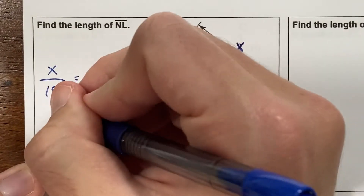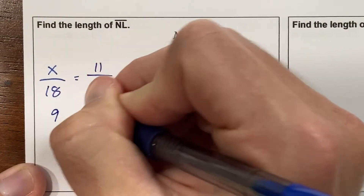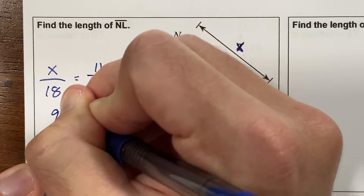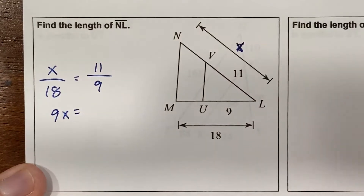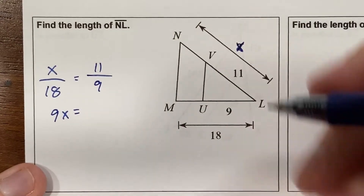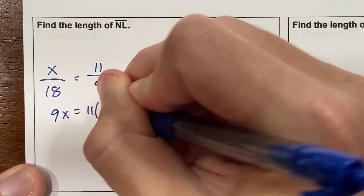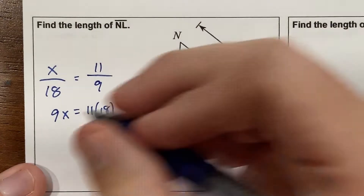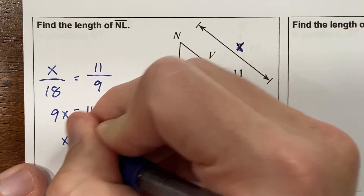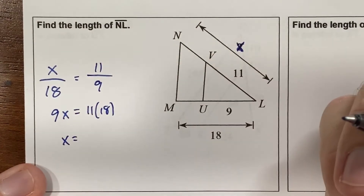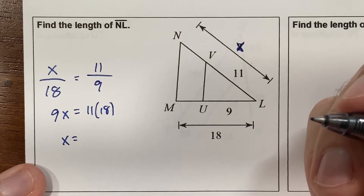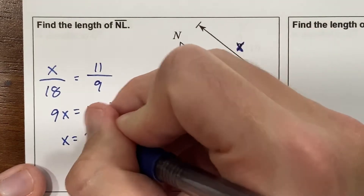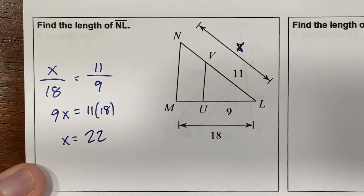You cross multiply: 9x equals 11 times 18. Doing that in my head — that's 198, so x equals 22.